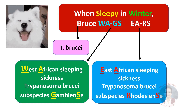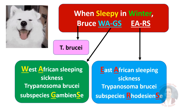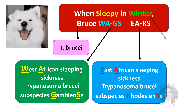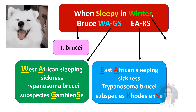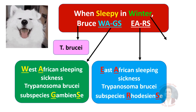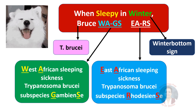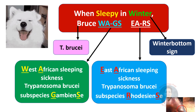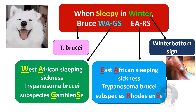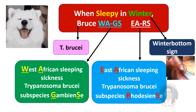The word 'winter' in the mnemonic helps us remember that in the first stage of sleeping sickness, Winterbottom's sign is seen — that is, the posterior cervical lymph nodes are enlarged.